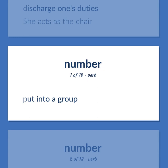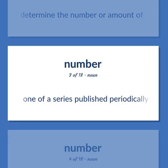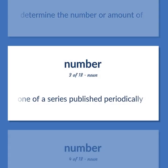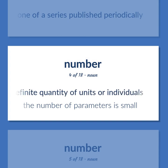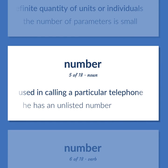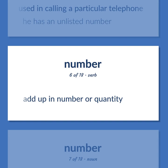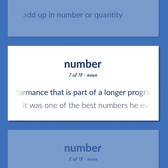Number: Put into a group. Determine the number or amount of. One of a series published periodically. The property possessed by a sum or total or indefinite quantity of units or individuals. The number of parameters is small. The number is used in calling a particular telephone. He has an unlisted number. Add up in number or quantity. A short performance that is part of a longer program. It was one of the best numbers he ever did.